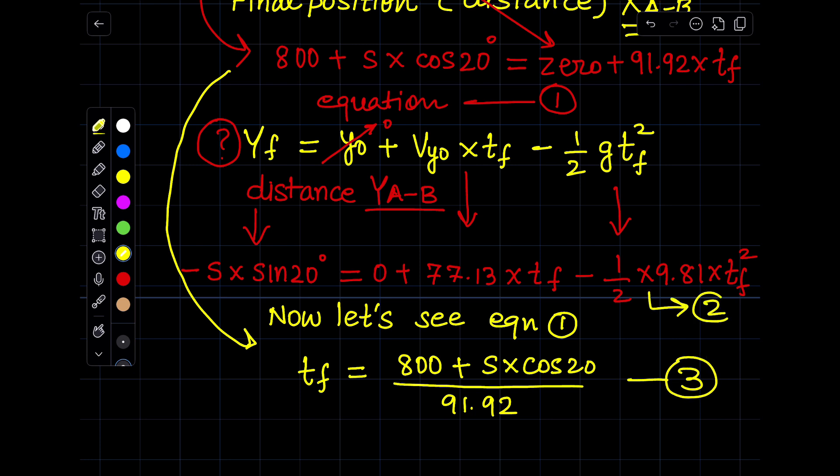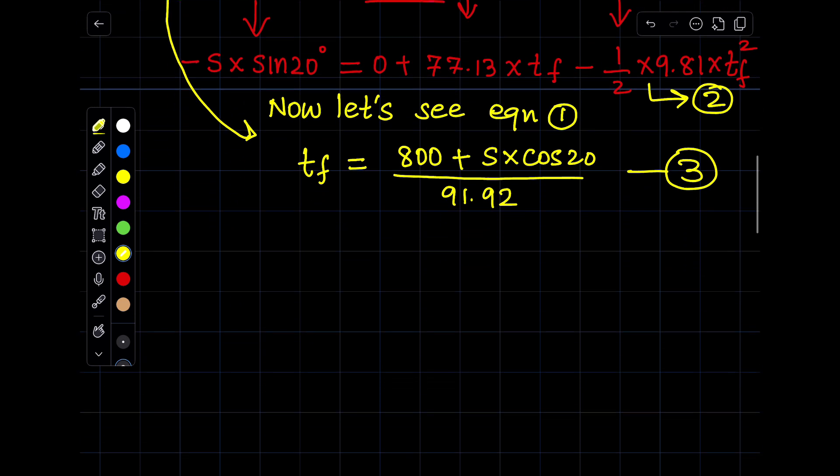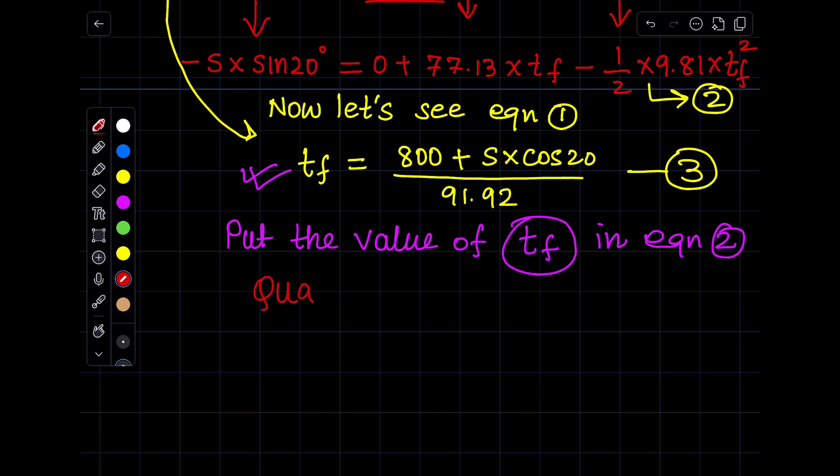This is the Y equation, equation 2. So you will put this relationship of TF in equation number 2. Now your equation will be a little bit complex because there are so many complex values here. So I will suggest to solve this equation, you can use a scientific calculator because you have to solve equation 2 using the value of TF. This equation will become quadratic. Put the values or this equation in your scientific calculator and you will find the values for S.